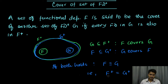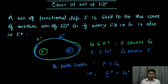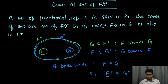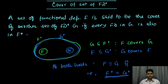All functional dependencies in f plus will be there in g plus. If these two sets of functional dependencies f and g are equivalent, it also does not mean that both will have the same set of functional dependencies. For f plus and g plus, if f and g are equivalent then f plus and g plus will be equal, but for f and g themselves it is not necessary that both will have common functional dependencies.